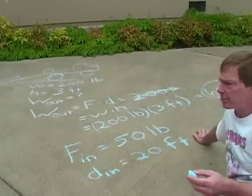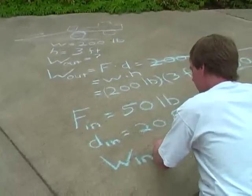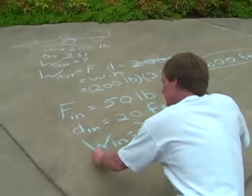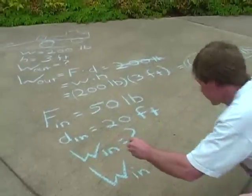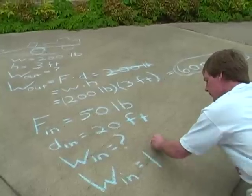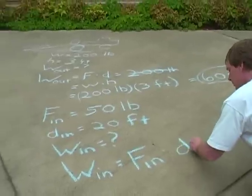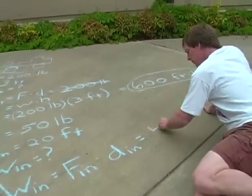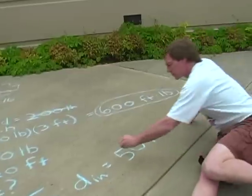And I want to know, what's my input work? Well, this will be easy. Work in equation is the input work is equal to the input force times the input distance. And that's equal to 50 pounds times my input distance of 20 feet.